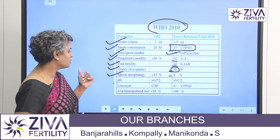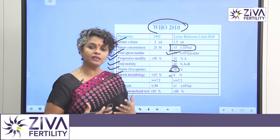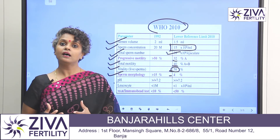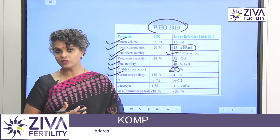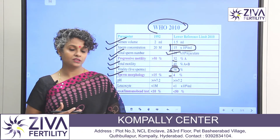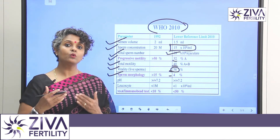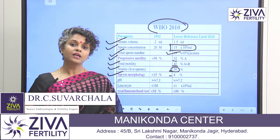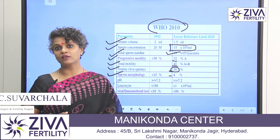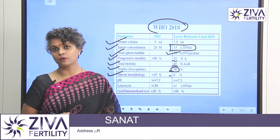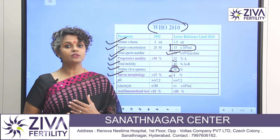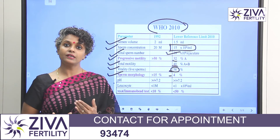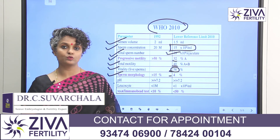Then we look at pH and leukocytes. These are of course very critical, but what you need to basically understand are the sperm concentration, motility, and morphology — these are very critical things. If the motility is less, it is called an asthenozoospermic sample. If the morphology is poor, it is called a teratozoospermic sample. Sometimes we encounter samples where all three parameters are below normal, and we term it oligoasthenoteratozoospermia.